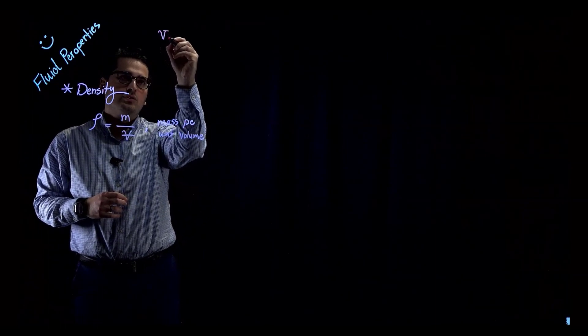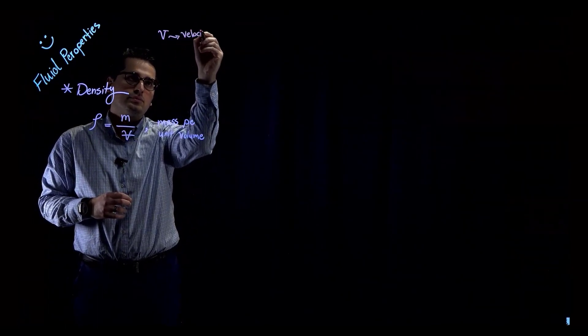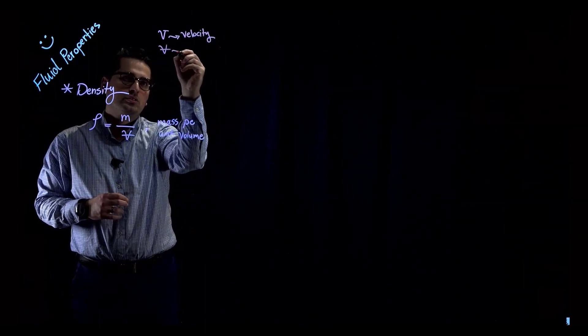I'm going to start with the first property: density. We show density using the Greek letter rho. Density is mass per unit volume. If I want to write it mathematically, it would be mass divided by volume. I use V for velocity and a separate symbol for volume so we don't mix them up.